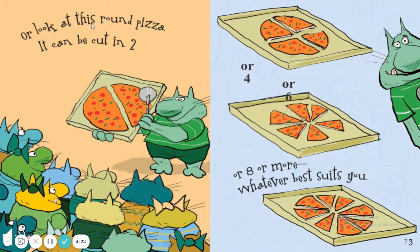Or look at this round pizza. It can be cut in two, or four, or six, or eight, or more — whatever best suits you. From what I could see here, these are all whole pizzas. They're just cut into different parts or different portions, but they still make up a whole pizza.